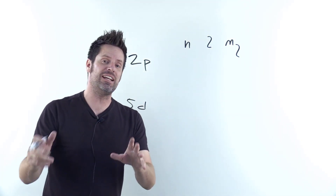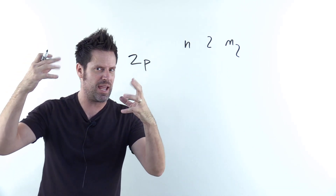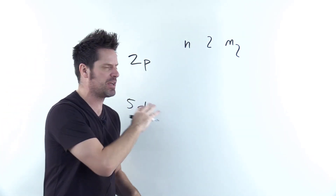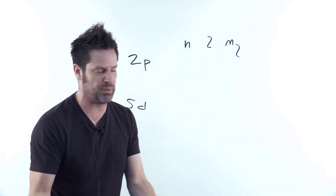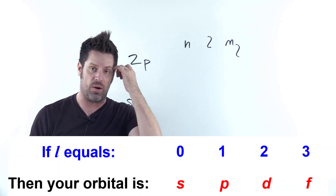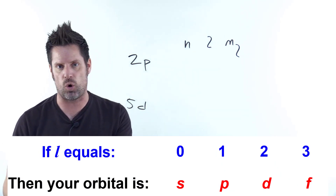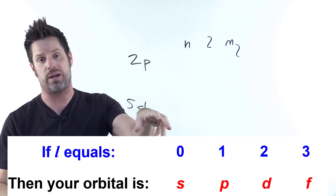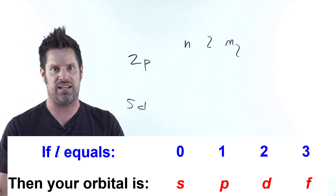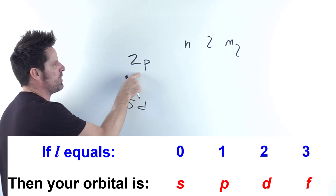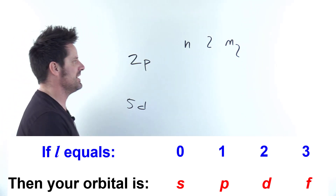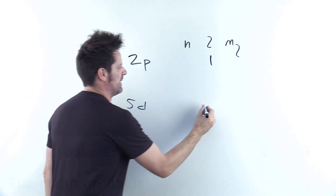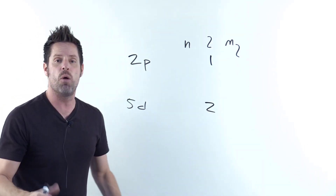As I tell you in an earlier video, linked in the description below or floating over my head somewhere, there are only four possible values for L, and usually when I'm doing quantum number problems like this I start with L because it's the simplest. Those four numbers are shown right here. If your L is 0 you're talking about s orbitals, if L is 1 you're talking about p orbitals, if it's 2 you're talking about d's, and if it's 3 you're talking about f's. So in this case I've got a 2p orbital, so L equals 1. Over here I've got a 5d, so L equals 2. No more, no less.